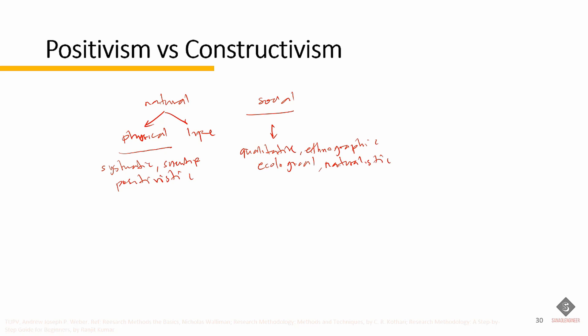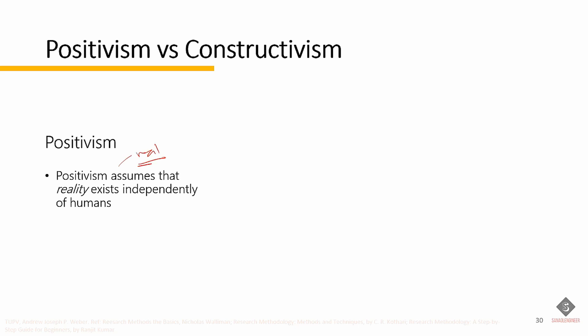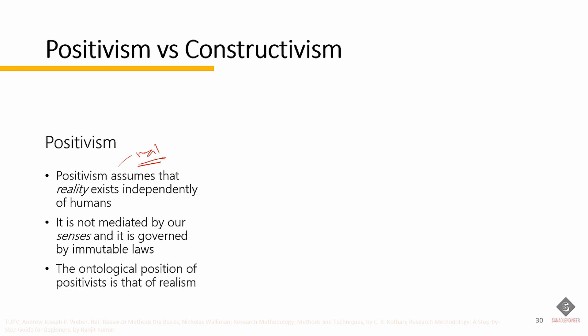The advocates of the two opposing sides have developed their own values, their own terminology, their methods and techniques to understand social phenomena. Positivism assumes that reality exists independently of humans. The positivist approach is based on the acceptance that the world around us is real and that we can find out about these realities. The world is not mediated by our senses and is governed by immutable laws. The ontological position of positivists is that of realism.